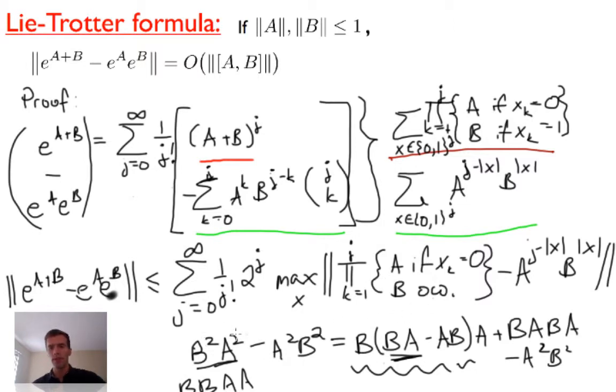In general, what's going to happen is every time you move an A one step to the left, you pick up a term that has a norm bounded by the commutator between A and B times the norm of A times the norm of B. Those are at most one by assumption, so we can ignore those terms. With our goal to bound this, we need to move all the A's all the way to the left. That means we need to move the first one at most J positions, the second one at most J positions, the third one at most J positions, and so on. That's actually quite conservative, but it's a good enough bound for us.